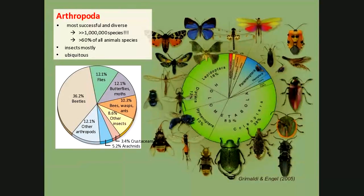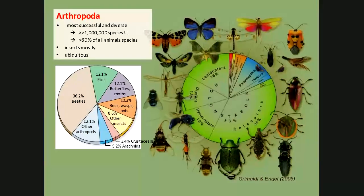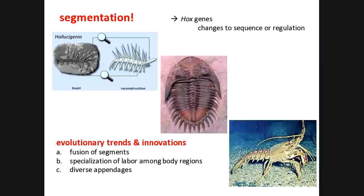Arthropods are ubiquitous — found everywhere. There are flies, beetles, butterflies, moths, bees, wasps, ants — all insects. There are also crustaceans like lobsters and shrimp, arachnids like spiders, ticks, and mites, and other arthropods like millipedes and centipedes. The big thing here is segmentation. Looking back in the fossil record to Hallucigenia — an ancient arthropod — those spikes were repetitive and obviously for protection. Trilobites, which died off around the Cambrian explosion, also show that segmentation.